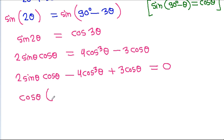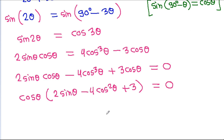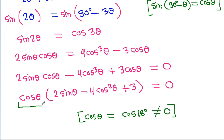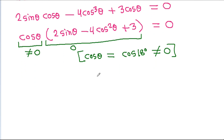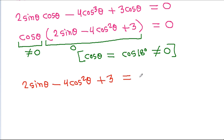We can take cosθ common. Now cosθ at 18 degrees is not equal to 0, so we can divide both sides by cosθ. This gives us 2sinθ minus 4cos²θ plus 3 is equal to 0.